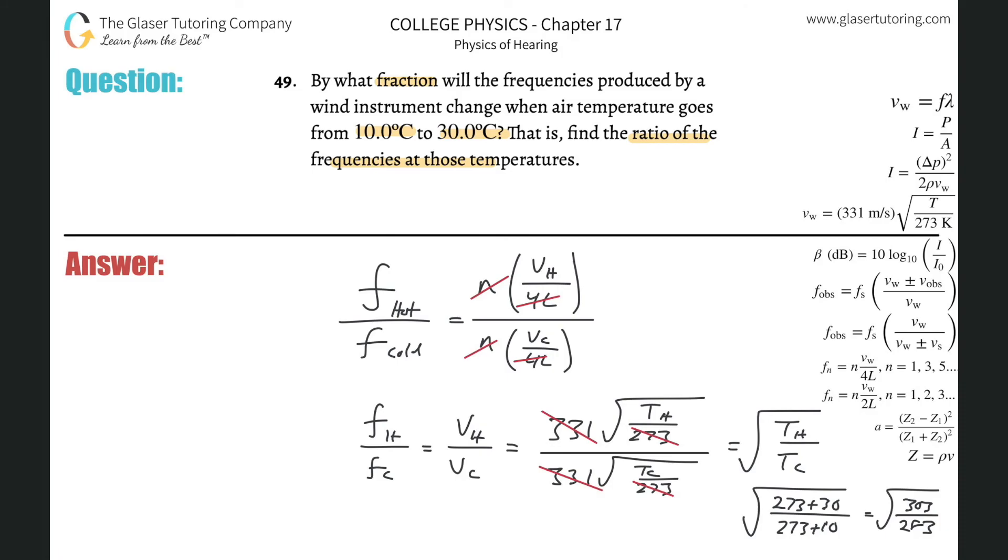And what do we get? 1.03. So by what fraction will the frequencies produced change? The hotter frequency will be greater by a factor of 1.03, or in other words, it'll be about 3% higher. Did I take the square root? Yes, I did. Good. That's it. Thank you very much, I appreciate it. Thanks for tuning in, and I look forward to helping with more problems. Take care.